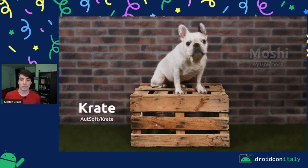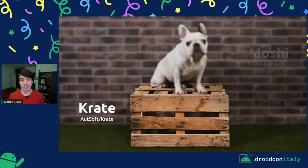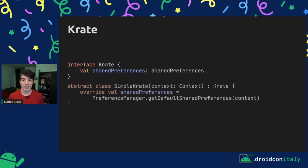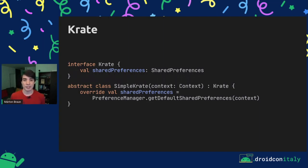We're going to start with Crate, which is a library that I created a while ago and I'm still maintaining. This library is a wrapper around Android's shared preferences APIs, and it makes them easier to use. On the code level, Crate is an interface — a super simple interface. It just has a shared preferences property in it. You also get a class called SimpleCrate, which makes it easier to implement this interface by extending the class. It takes a context as its parameter and gives you a default shared preferences object for that context.